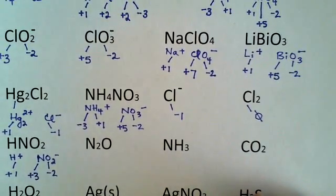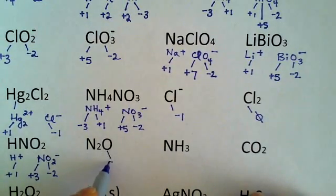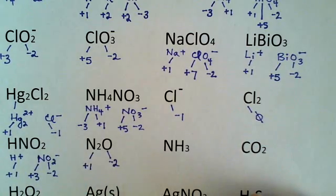N2O is dinitrogen oxide. Minus 2 for the oxygen again. And the whole thing is neutral, so each nitrogen must be a plus 1.